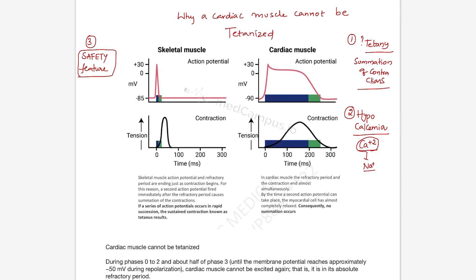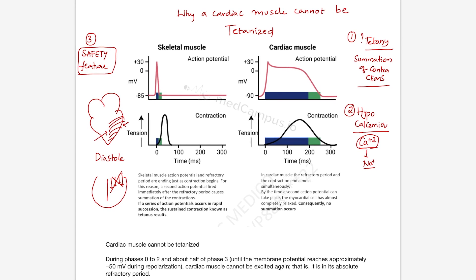It's a safety feature because if cardiac muscle undergoes a complete state of contraction, we all know diastole is the phase wherein relaxation of the ventricular muscle is very important. During the diastolic phase, filling of the heart occurs. If the heart goes into a complete state of contraction, there is no filling of blood in the ventricle and therefore no pumping of blood. That's the reason we have a safety or protective feature wherein the cardiac muscle cannot be tetanized.